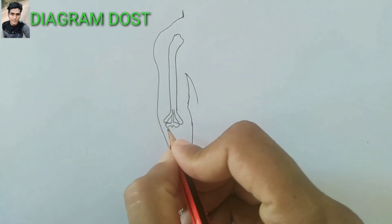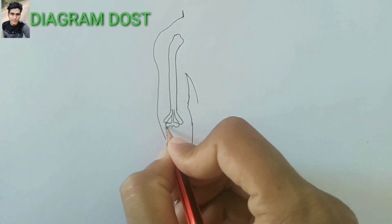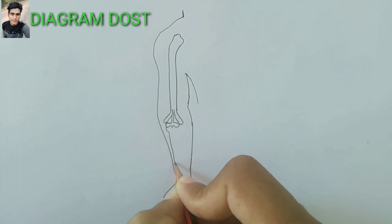Now I am drawing the radial bone. Take the straight line, now make little curve, then again back.